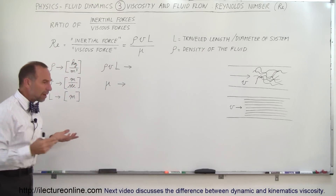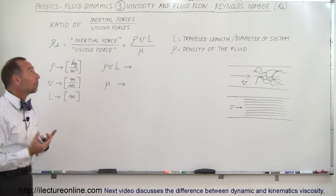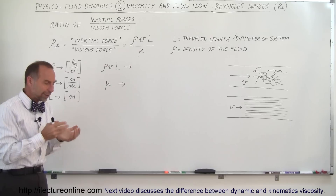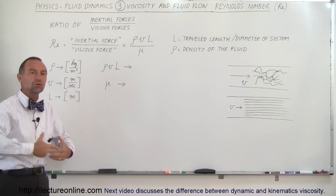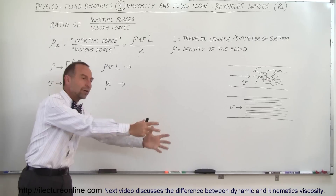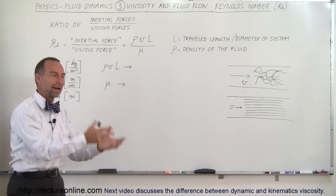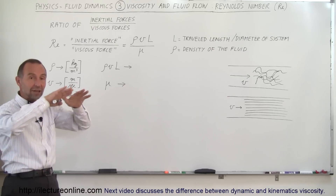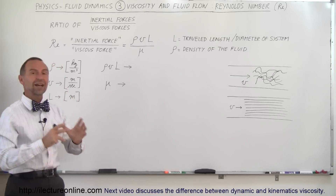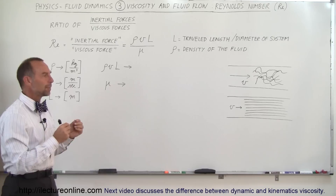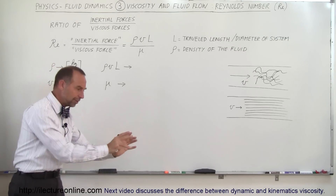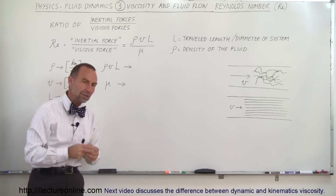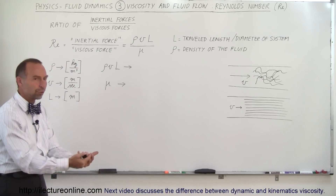How would we define the Reynolds number? It's basically the ratio of the inertial forces divided by the viscous forces. The inertial forces are the forces of the motion of the liquid — as the fluid moves through the pipe, between the plates, or whatever it may be, interacting with the sides. The momentum of the fluid and the interactions between the sides and between the molecules of the fluid are called the inertial forces.